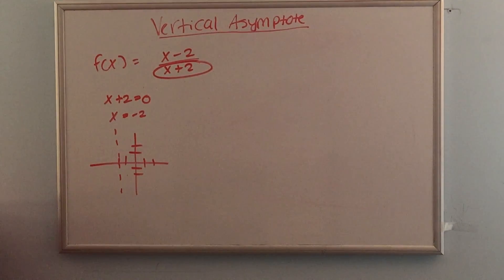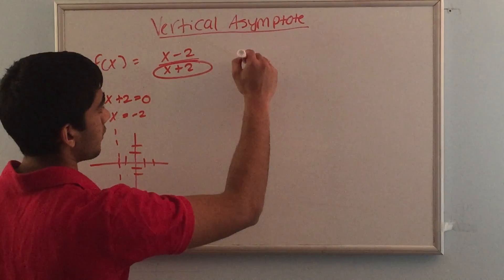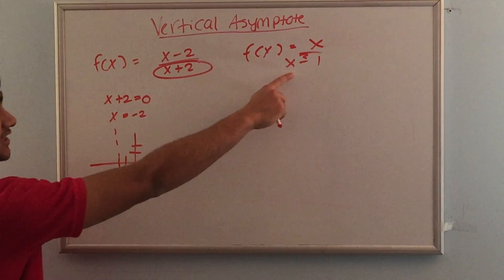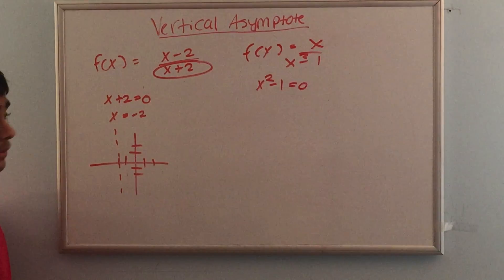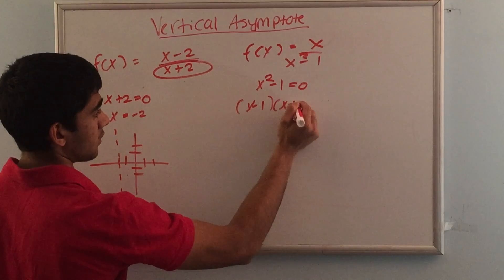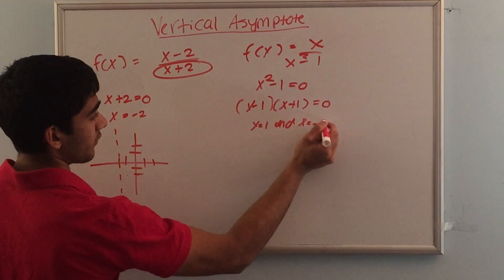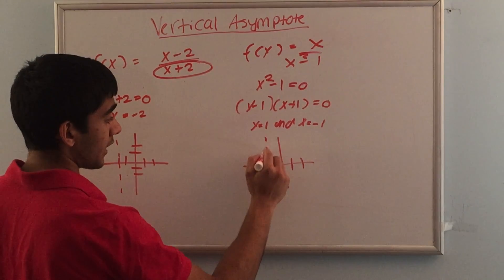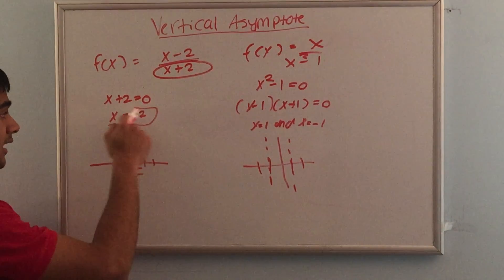It's as simple as that — take the denominator of the function, set it equal to zero, and that gives you your vertical asymptote. For example, for f(x) = x / (x² − 1), we set the denominator equal to zero: x² − 1 = 0. Factoring gives (x − 1)(x + 1) = 0, so x = 1 and x = −1. This function has two vertical asymptotes, one at x = −1 and one at x = 1.